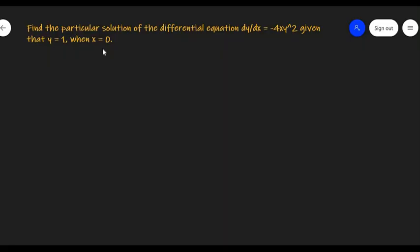Hello, let's find the particular solution of the differential equation dy/dx = -4xy^2, given that y = 1 when x = 0.